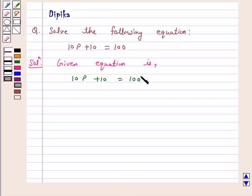Now, we want to separate the variable p. So, first let's subtract 10 from both sides.